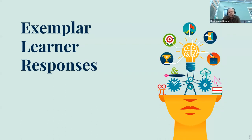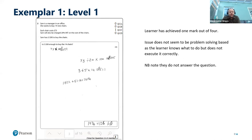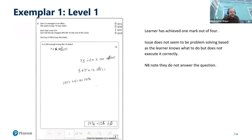Let's look at some exemplar learner responses — actual responses from learners taking our assessments in a live format. Here we have the chairs question shown at the beginning. The learner has achieved one mark out of four. The issue does not seem to be problem solving based — the learner knows what to do but doesn't execute it correctly. They've worked out the cost of 14 chairs and attempted to work out the VAT, but the percentage calculation for the 20% is what they got wrong. They also don't answer the question — they give a value but don't say yes or no as to whether it's enough.